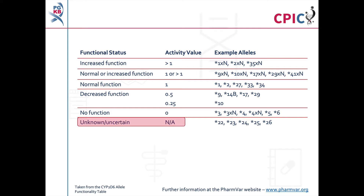An important caveat for all genotyping tests is that any alleles which are not detected in the assay are designated as star 1. This can include rare increased function, reduced function, and non-functional alleles which are not routinely screened for in some genotyping tests.